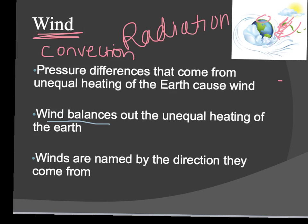Winds are named based on the direction that they are coming from. So a nor'easter comes from the northeast. A westerly wind comes from the west and goes to the east. A southwest wind comes from the southwest and goes to the northeast.